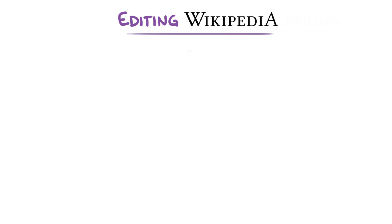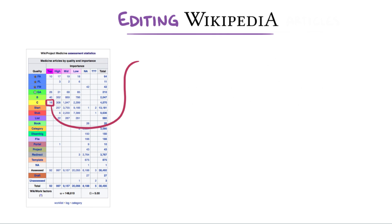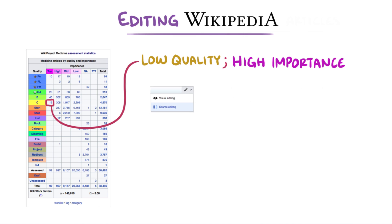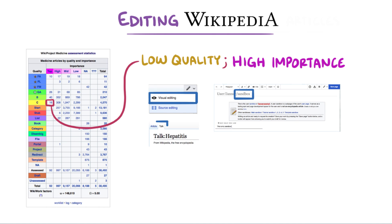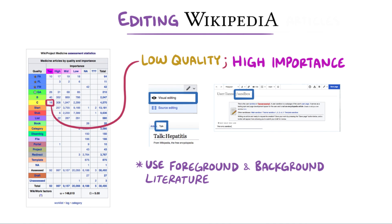Alright, as a quick recap: editing Wikipedia is exciting and impactful work. One way to get started is to select an article that's rated as having low quality but high importance. You can make editing easier using the visual editing tools. Don't forget your sandbox to test out your writing, and use your talk pages to collaborate with other Wikipedians. Finally, use both foreground and background literature as sources to cite your work appropriately. Thanks for making Wikipedia a better source for health-related information. Happy editing!